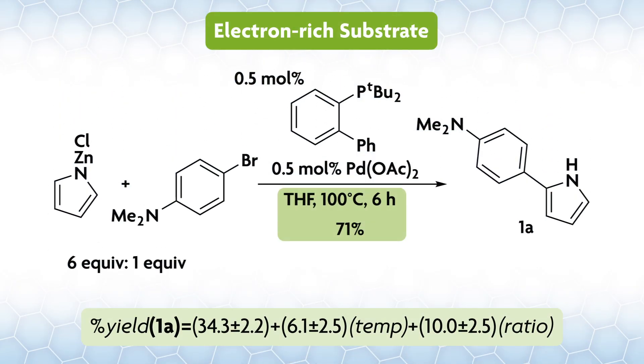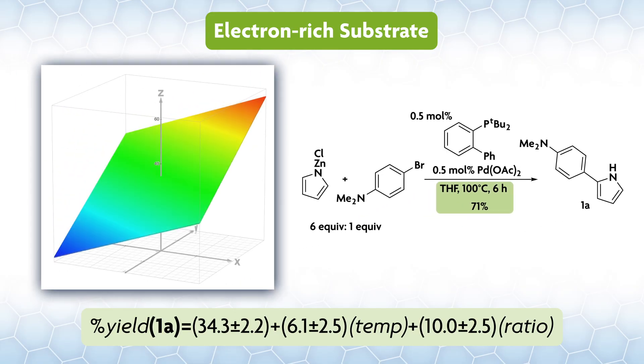For the electron rich substrate we examined, these are the optimized conditions. The model here is much simpler with only primary variables and only two of those, temperature and ratio. For this simple model, you can plot the whole flat surface and it looks like this. When trying to isolate paroles with electron rich aromatics like this, there was an unidentified byproduct that was difficult to separate using the original conditions at 60 degrees C for 17 hours. The optimized conditions at a higher temperature for a shorter time give a higher yield and a cleaner product that is easily purified.